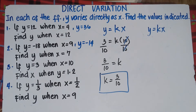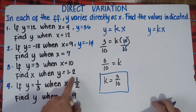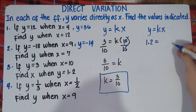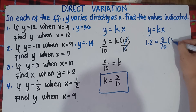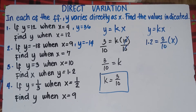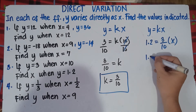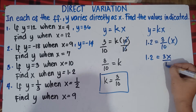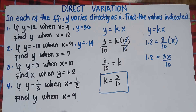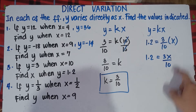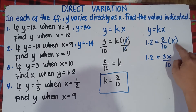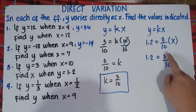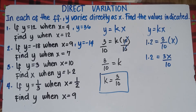Once you get k, substitute k into the equation. Find x when y equals 1.2. So 1.2 equals 3 over 10 times x, which gives 1.2 equals 3x over 10. We will simplify this with two solutions: multiplication property of equality, or cross multiplication.